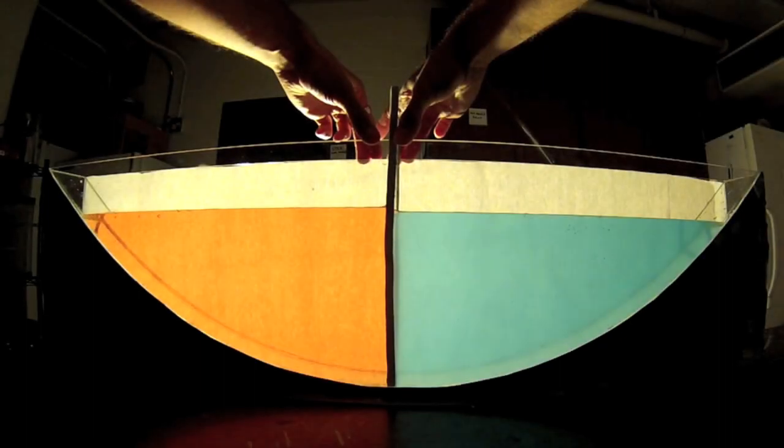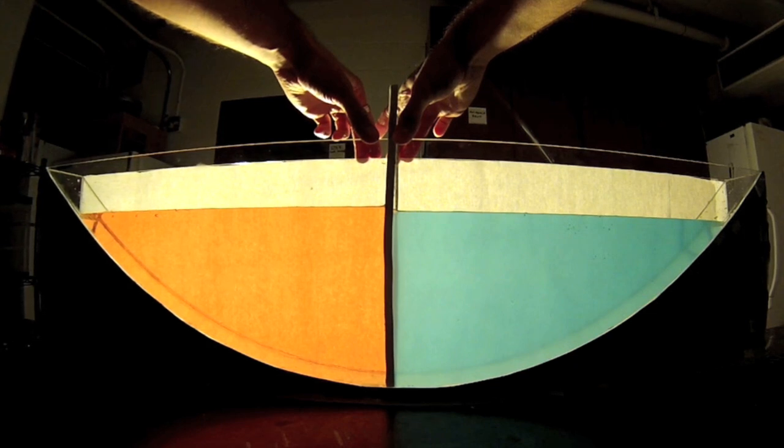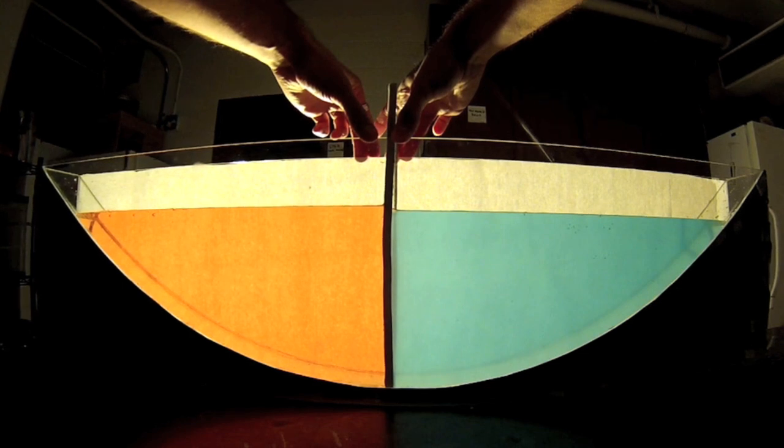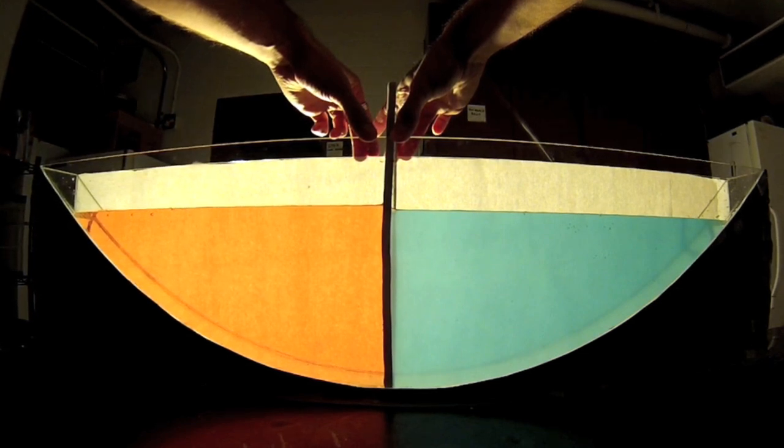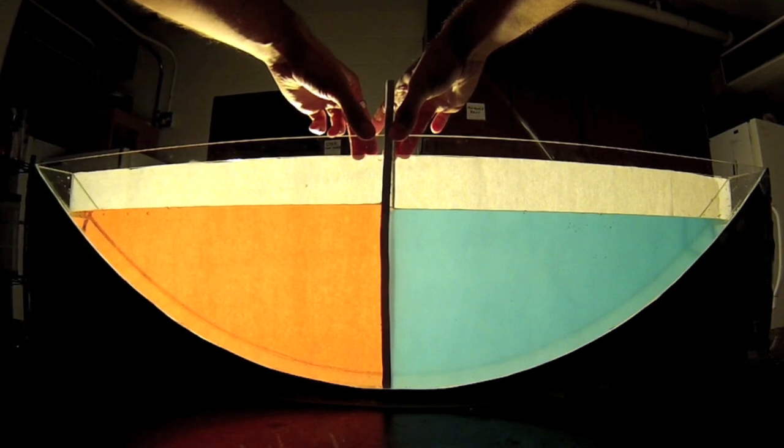What we have here is a model of a lake cut in half down the middle. We've taken all the warm water, dyed red, and moved it to one side. The cold water, dyed blue, is moved to the other side. In the middle is this barrier that keeps the sides separate. Now let's remove the barrier and watch what happens.